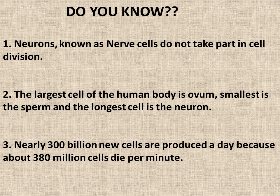Do you know neurons, known as nerve cells, do not take part in cell division? The reason is that neurons cannot form the centrosome, and as such no spindle fibers form. Hence, unlike most animal cells, neurons generally don't divide. In plant cells, cells of permanent tissue also do not divide.